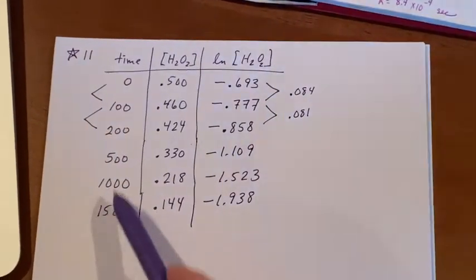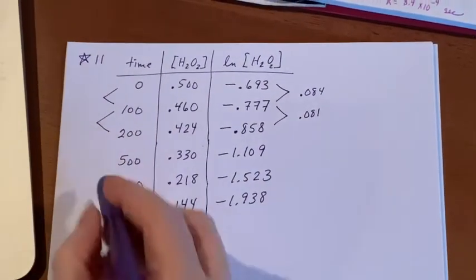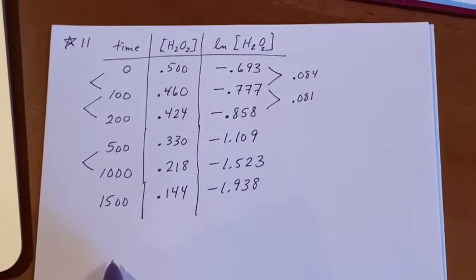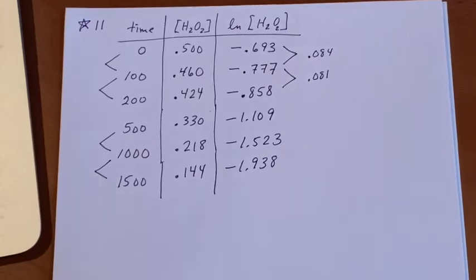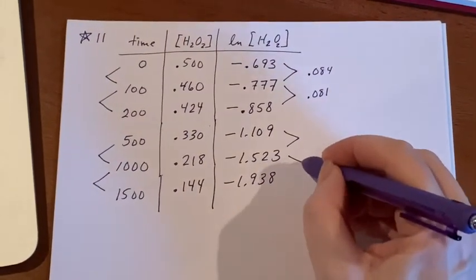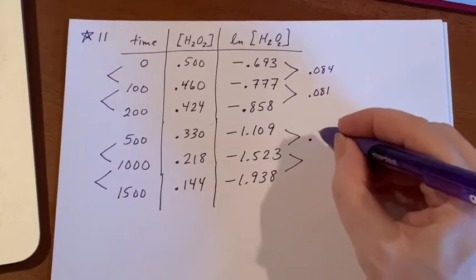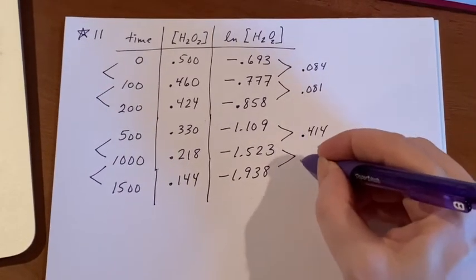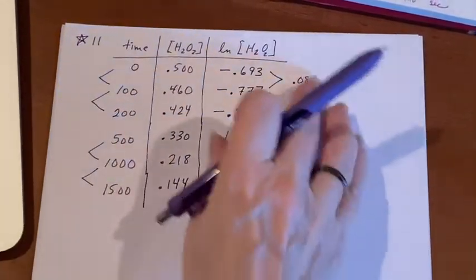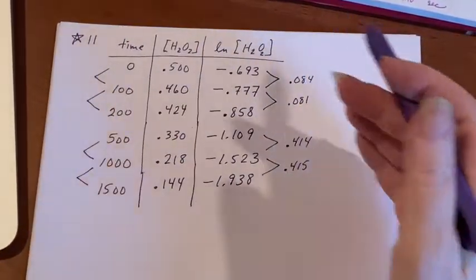Now, this doesn't continue up by hundreds, but I do see that the difference here of 500 is the same and the difference here of 500 is the same. So let's check these two and see if they are equal to each other. I get 0.414 and 0.415. This looks like it's linear here. This looks like it's linear here. Is it linear all the way through?